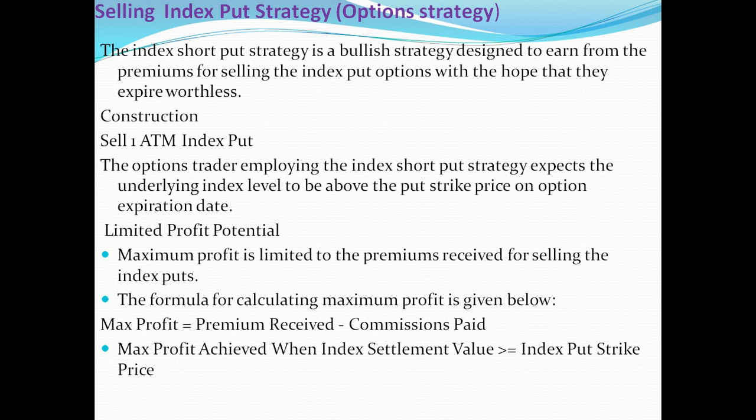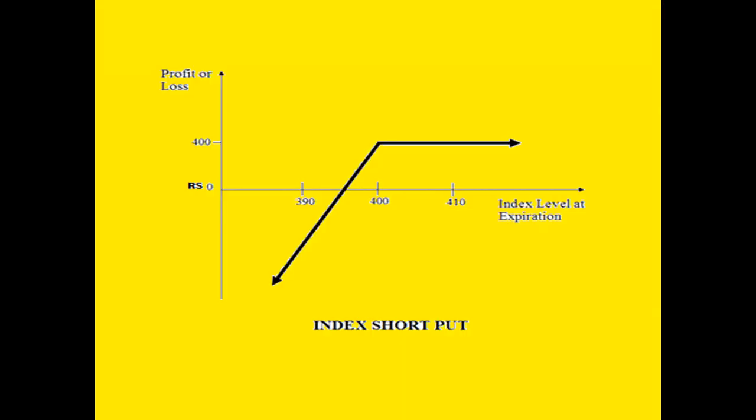Construction: how we can construct selling ATM index put. An option trader implying the index short put strategy expects the underlying asset to be above the put strike on the option expiry date. Limited profit potential — maximum profit is limited to the premium received for selling the index put. The formula: maximum profit equals premium received minus commissions paid. Maximum profit is achieved when the index settlement value is greater than or equal to the index put strike price.